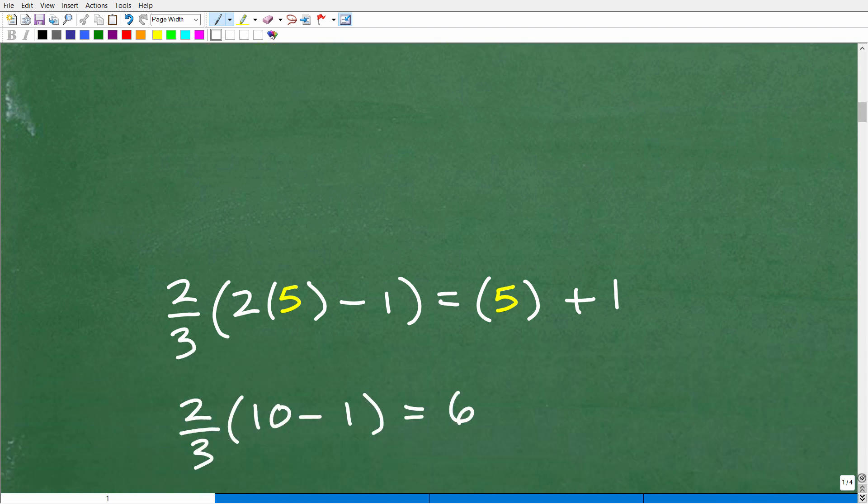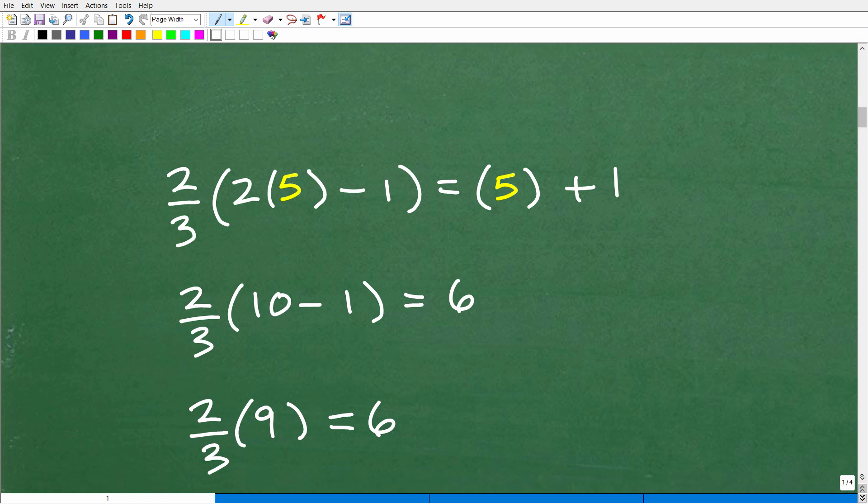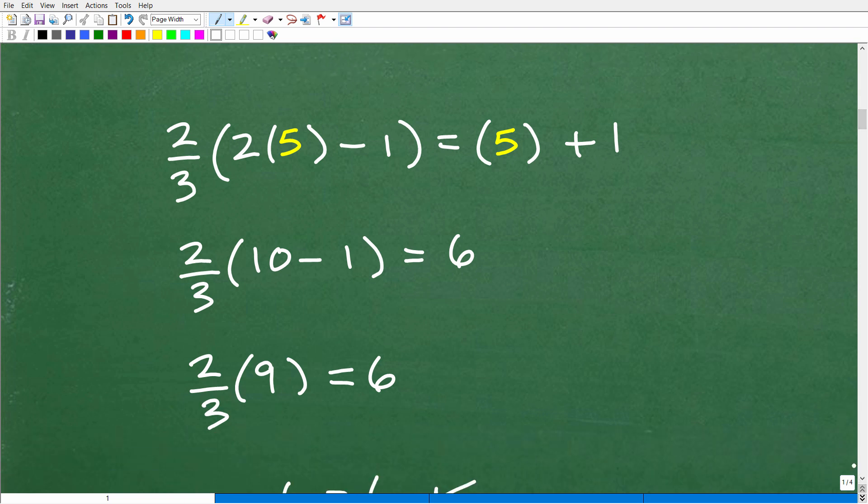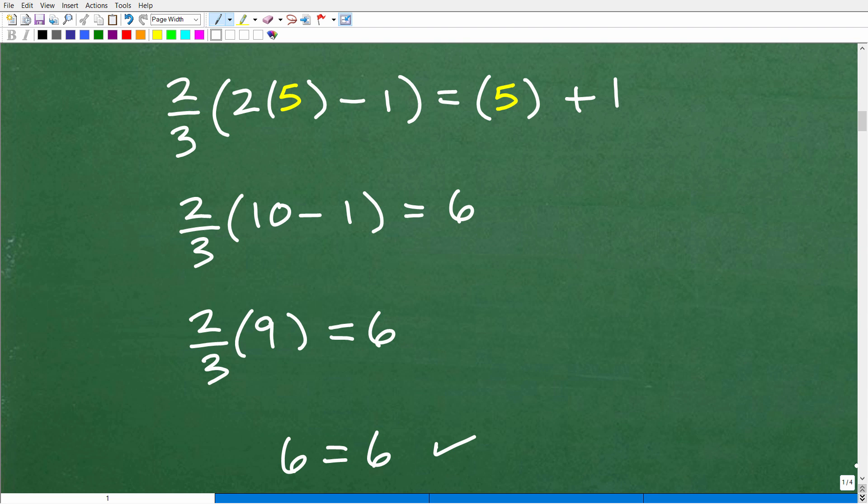All right, so let's plug in 5 for x and see what happens. So the answer is yes. In fact, it is the solution. But let's go ahead and go through it. So we have 2 times 5 minus 1. Okay? So 2 times 5 is going to be 10. Remember, I've got to do everything inside the parentheses, and I've got to do multiplication before subtraction.